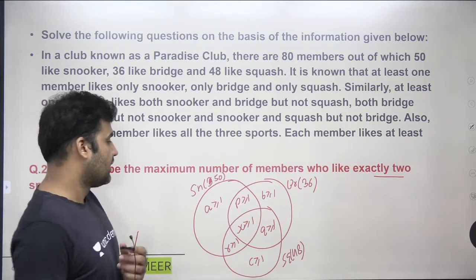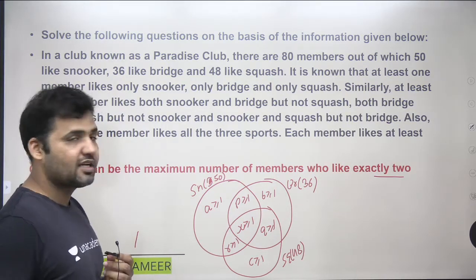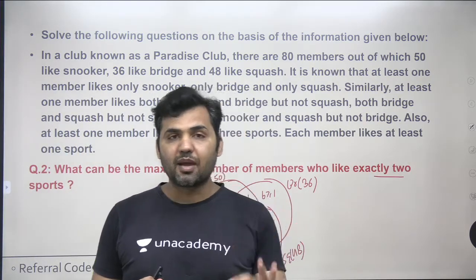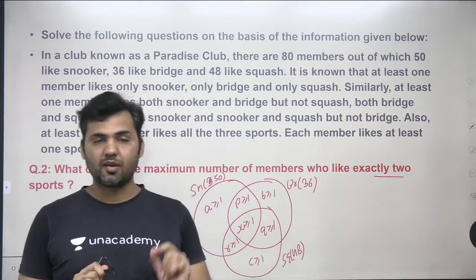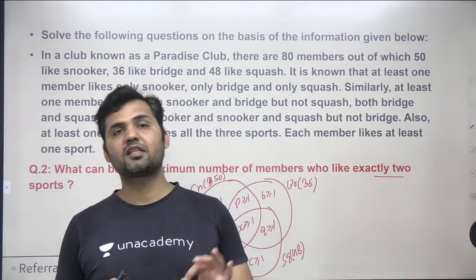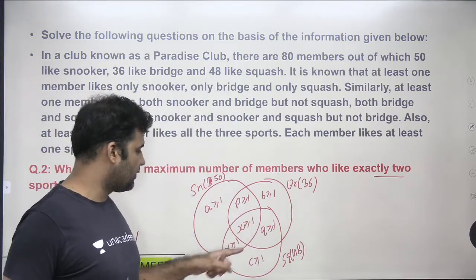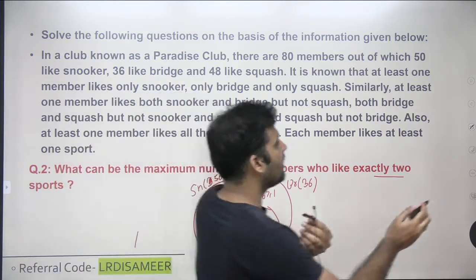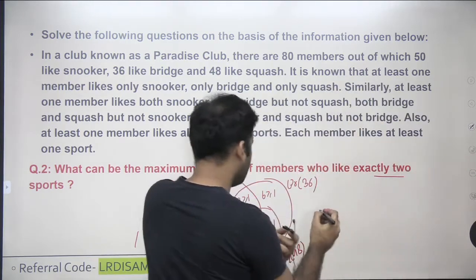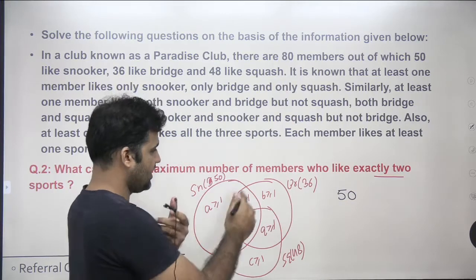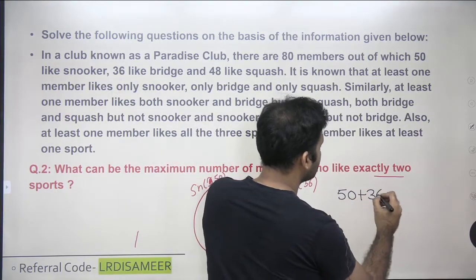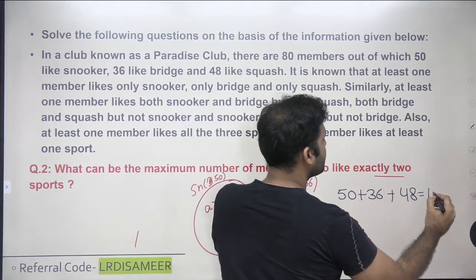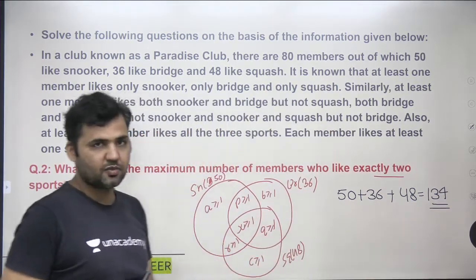The total number of members is 80. We will follow the same approach: we assume how many prizes we are distributing. A member playing one game is awarded one prize, a member playing two games gets two prizes, and a member playing three games gets three prizes. So I'm distributing 50 prizes for snooker, 36 for bridge, and 48 for squash — a total of 134 prizes to be distributed.